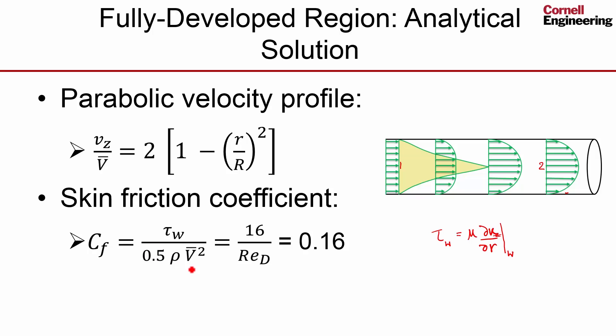This is a measure of the kinetic energy in the free stream. When you plug the velocity profile in here, you get a very simple result: 16 over the Reynolds number. In our case, Reynolds number is 100, so the skin friction coefficient C_f in the fully developed region we expect to be 0.16.